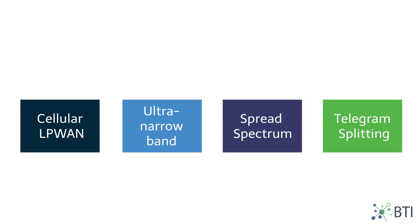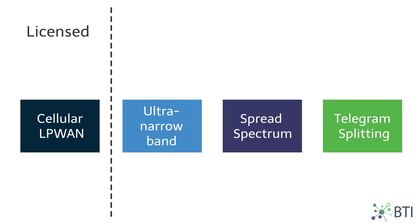There are four main LPWAN technologies on the market that fall into two groups based on their operating spectrum: licensed and license-free. Here are the main differences you need to know.